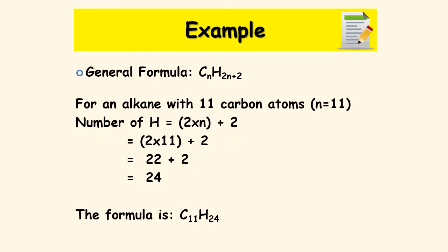For an alkane with 11 carbon atoms, n = 11. The number of hydrogen atoms is 2 × 11 = 22, plus 2 = 24. So we can write the chemical formula as C₁₁H₂₄. The general formula allows us to write the chemical formula for any alkane with any number of carbon atoms.